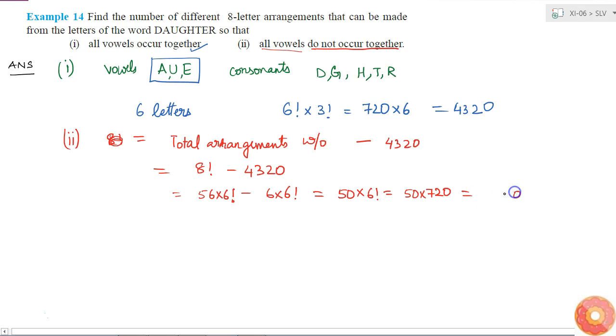Which will be 36,000 arrangements. Therefore, if all the vowels do not occur together then I can have 36,000 possibilities, and if all the vowels have to occur together then I'll have 4320 arrangements.